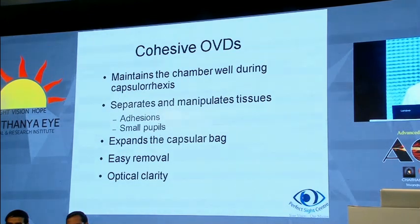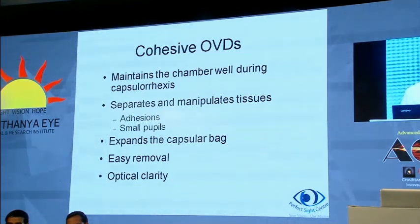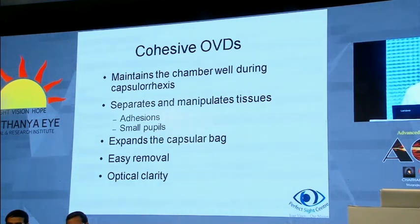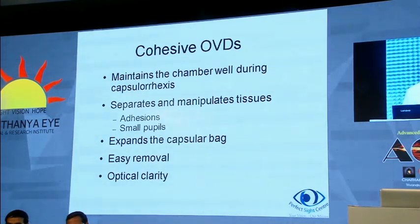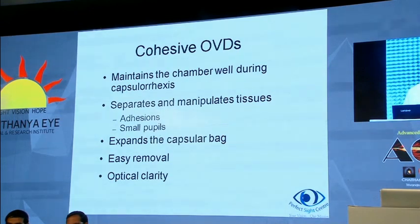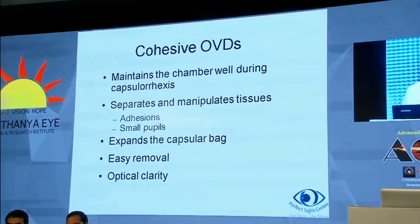Cohesives maintain the chamber well during capsulorrhexis — this is a very important property. They separate and manipulate tissues; for example, in small pupils, you push in a cohesive and it will dilate the pupil to some extent and expand the capsular bag very well. They are also very easily removable — when you do irrigation aspiration, the cohesive comes out like a blob.